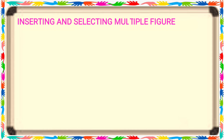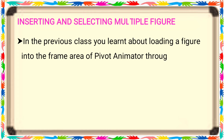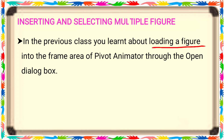In the previous class, you learned about loading a figure into the frame area of Pivot Animator through the open dialog box. Similarly, in the last class, one of the things you have to do is import more than one figure — that means use the load figure option. Loading a figure into the frame: one of the frames that you have to import. In the Pivot Animator open dialog box, you can import the figures.